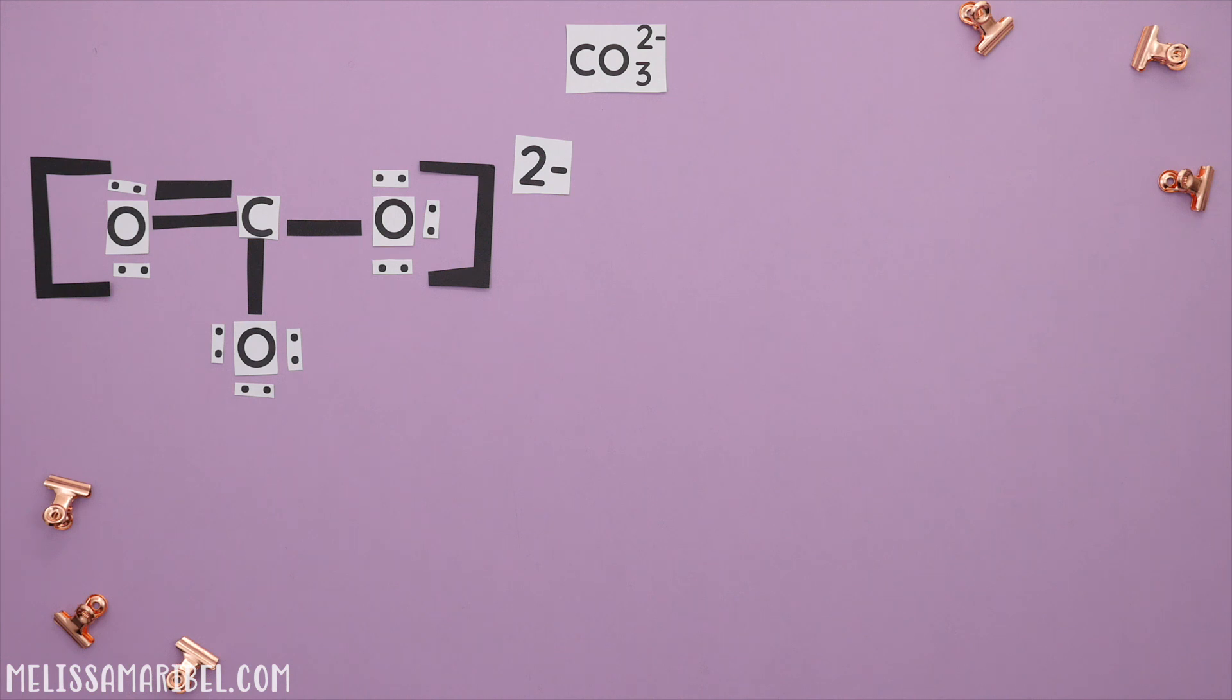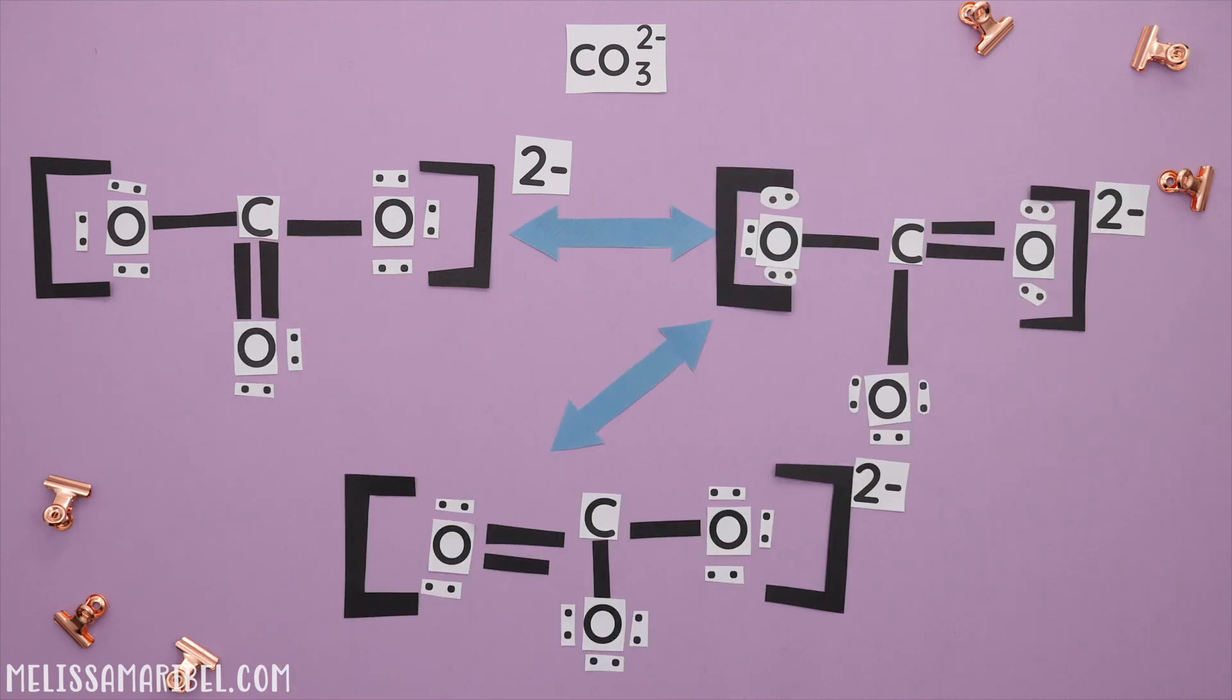Resonance is represented by a double arrow. There's one more resonance structure. So we'll move the electrons to this other oxygen and break the double bond here and reform it on this oxygen. These are all of our resonance structures.